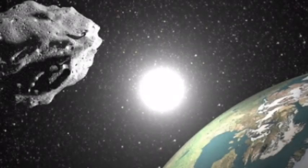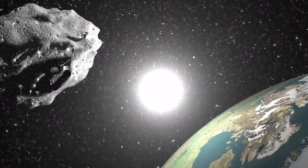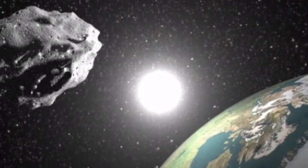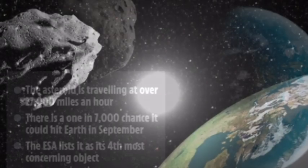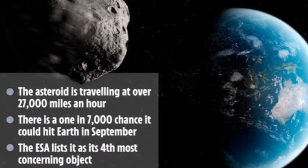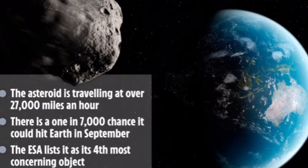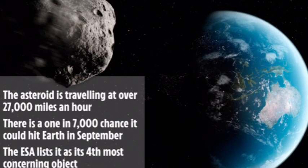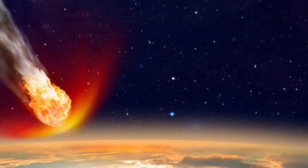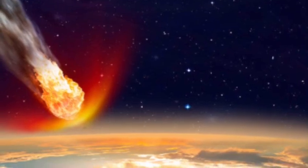Asteroid impact averted. Space agency confirms giant asteroid will miss Earth in 2019. Asteroid 2006 QV 89 recently hit the headlines because of its calculated one in seven thousand chance of colliding with Earth. Although an apocalyptic asteroid calamity